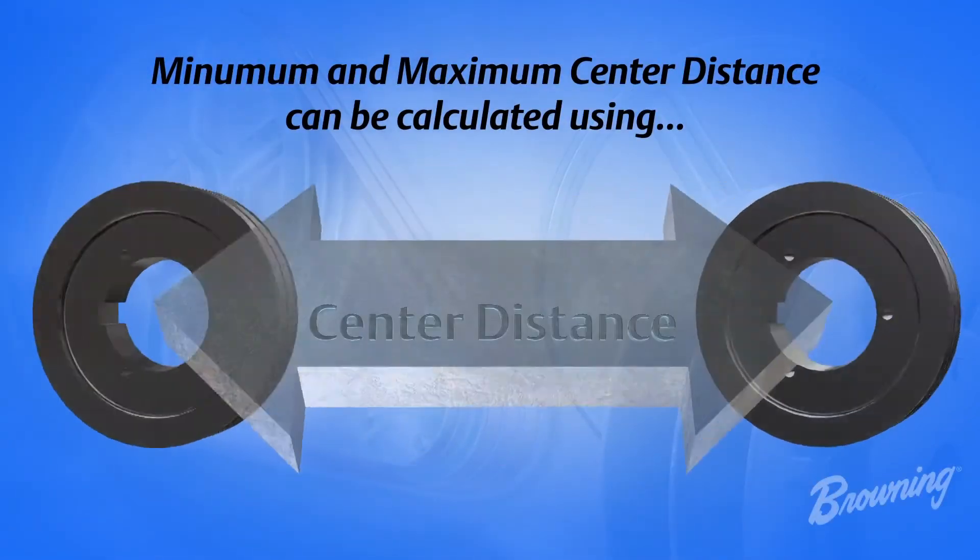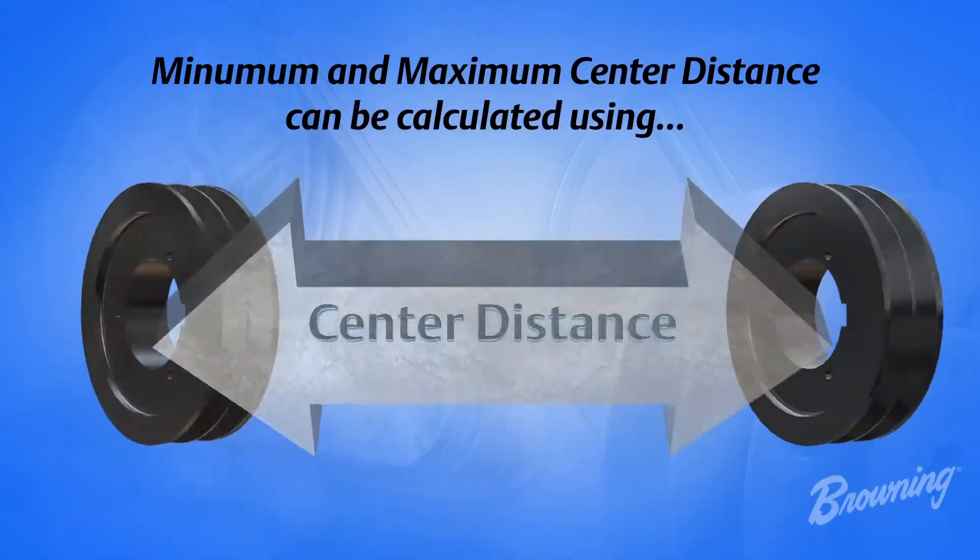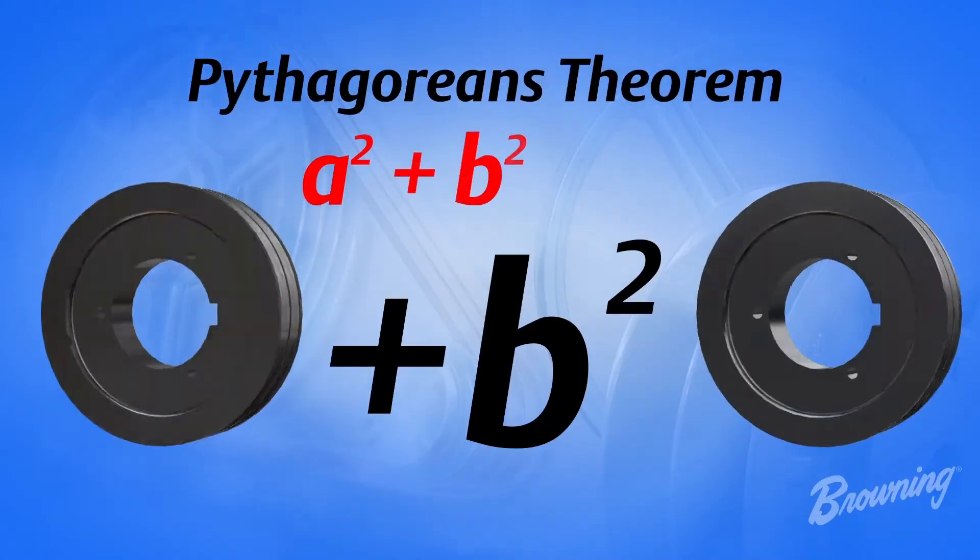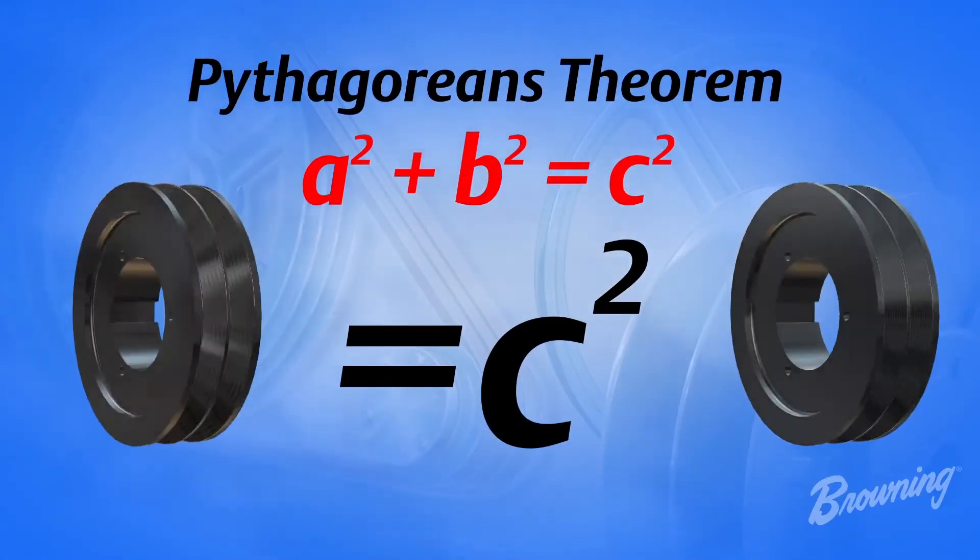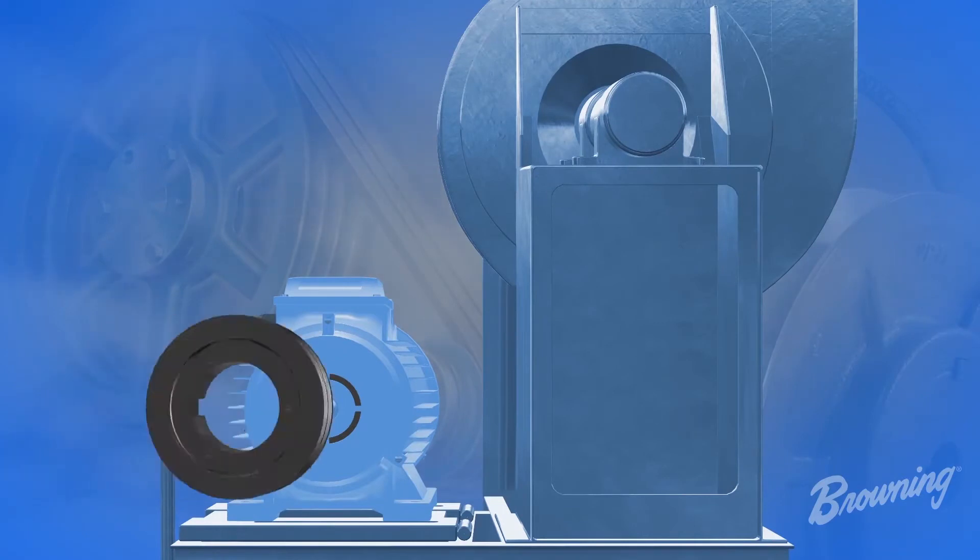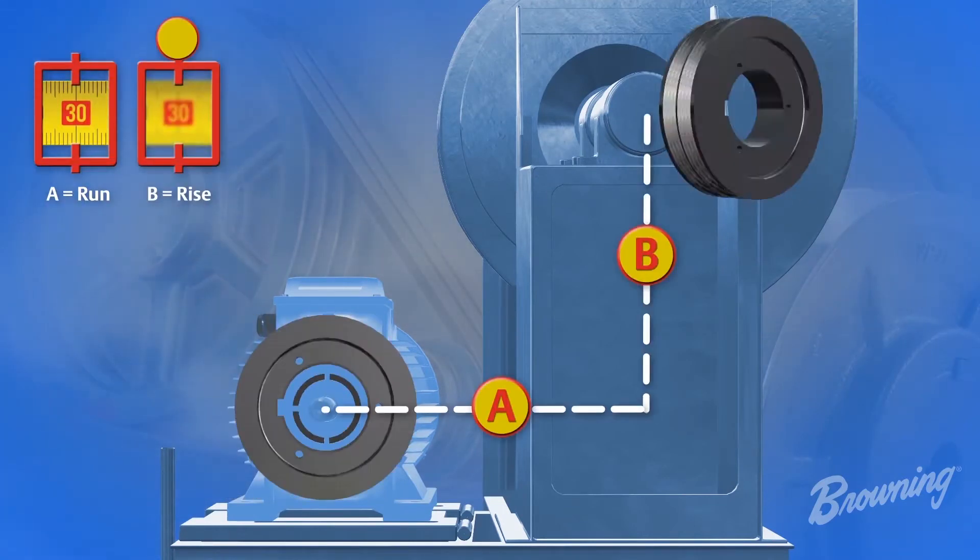minimum and maximum center distance can be calculated using Pythagorean's theorem, stating that a squared plus b squared equals c squared. In this case, a equals run, b equals rise,